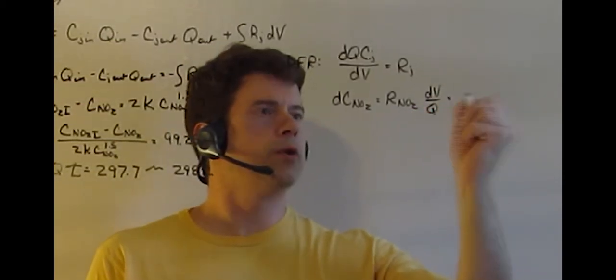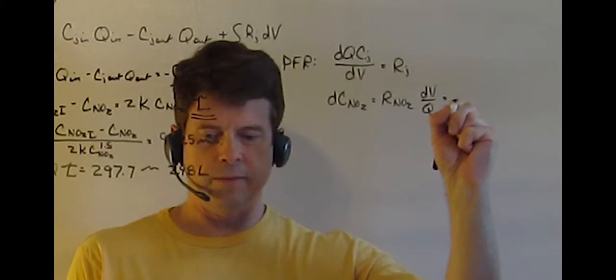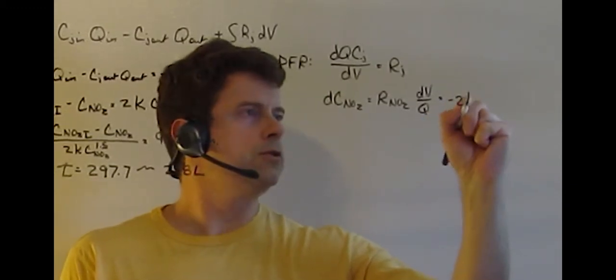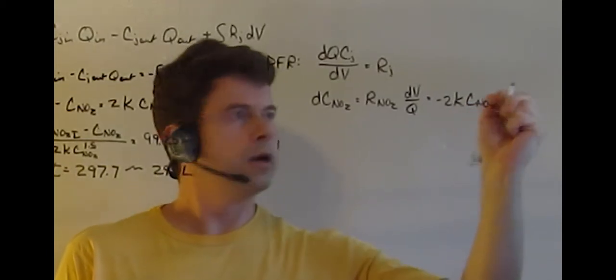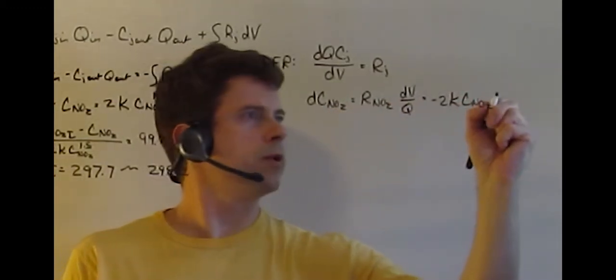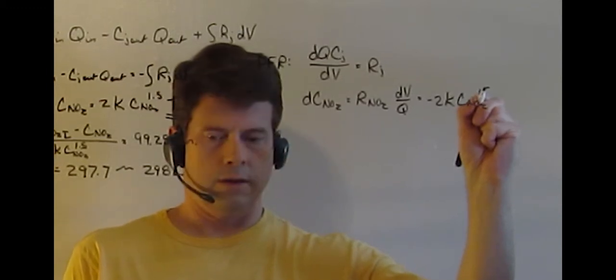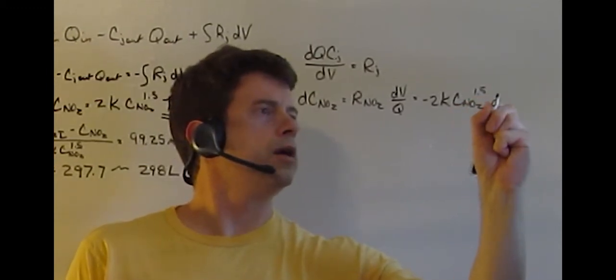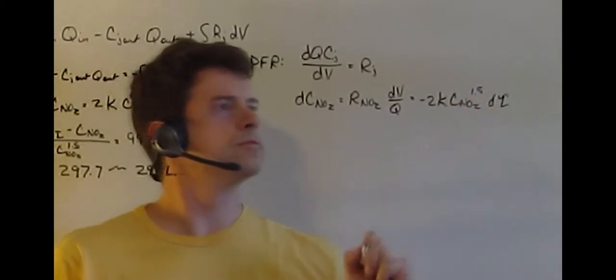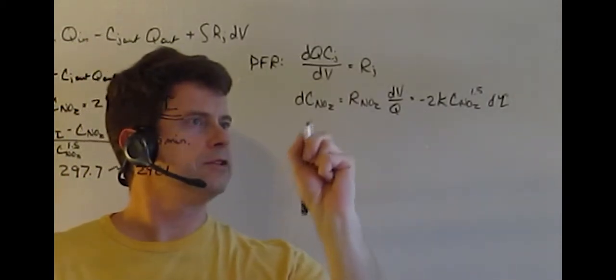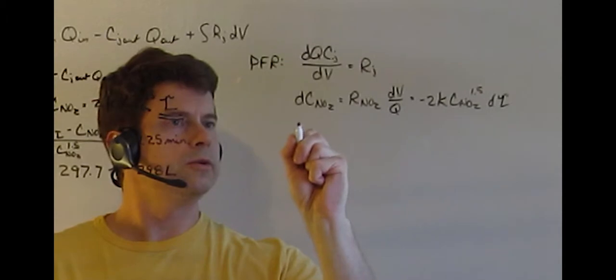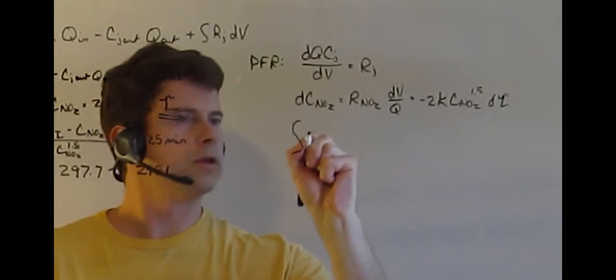NO2 times, this is now DV over Q. Then we plug in our values for that, that's going to be negative 2K CNO2 to the 1.5 value, and that's D tau.